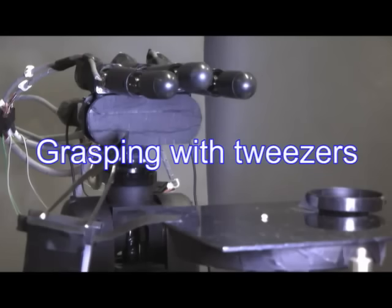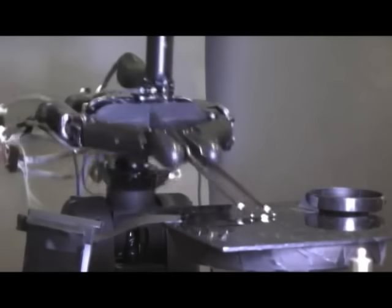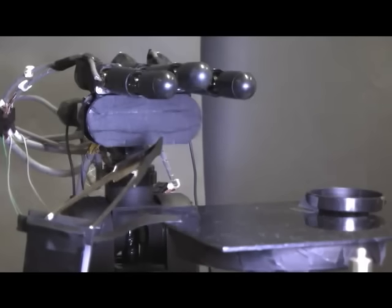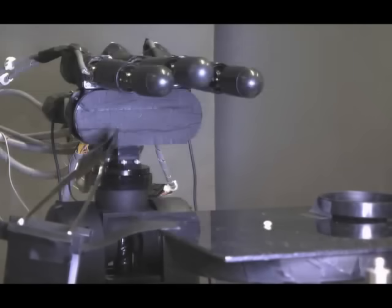This is grasping a rice grain with tweezers. The tiny object is manipulated using a typical human tool. High-speed visual servoing enables the modification of force between the finger and the tool.